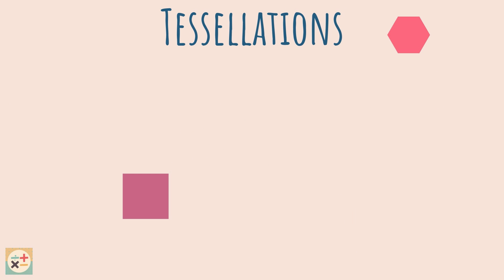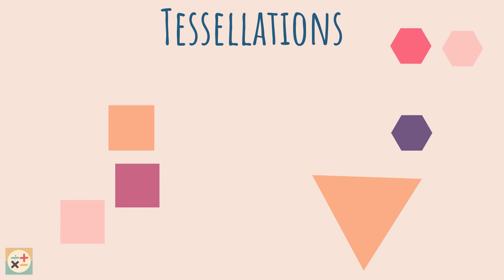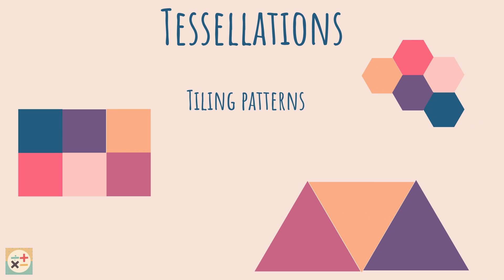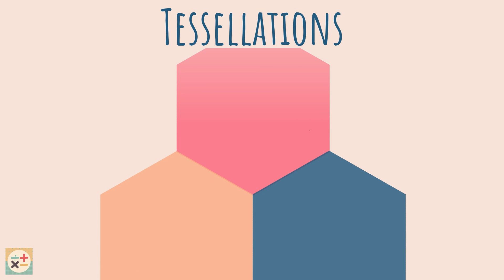So what are tessellations? Tessellations are tiling patterns formed of shapes with no gaps in between. Regular tessellations are formed of regular polygons. We can see if a regular polygon will tessellate by using the interior angles. The vertices of the shapes should all form a 360-degree angle with no gaps in order to tessellate.